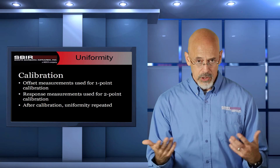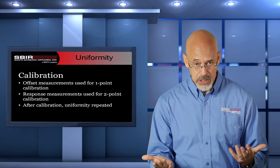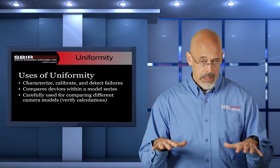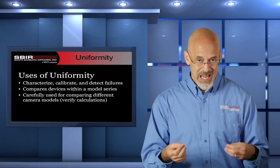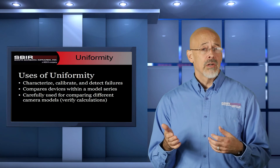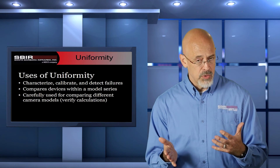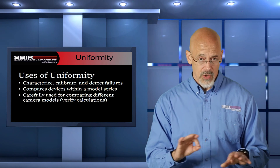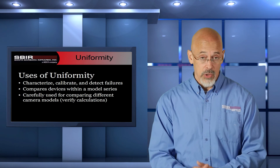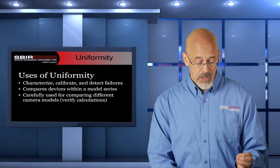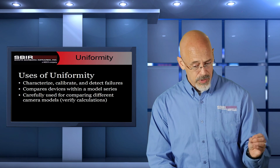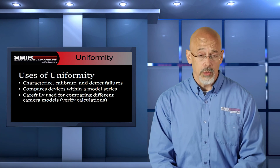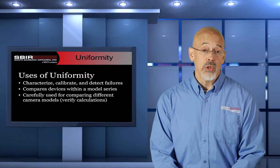You can also use uniformity to detect a failure — some cameras are so non-uniform they won't meet any particular task, so you fail the camera. You can compare devices within a model run to assess quality using the same formula. It becomes tricky, however, when comparing cameras from different model runs or different manufacturers, because you need to identify how they performed their uniformity measurement and eliminate the ambiguities. If it's always using the same calculation within a lab, that's a valid measurement within a model run — but when comparing across labs, they may be using different ways of calculating the value, and the comparison isn't so clear. And that is how uniformity is applied.